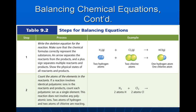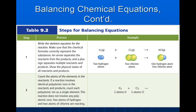The steps for balancing equations: the first thing we always want to do is write what's called a skeleton equation for the reaction. We make sure the chemical formulas correctly represent the substances — if you write the wrong formulas, you will not be able to balance the equation or you will balance it incorrectly. An arrow separates the reactants from the products, and a plus sign separates multiple reactants and products. You also want to show the physical states of all reactants and products: solid, liquid, gas, and aqueous, which means dissolved in water.